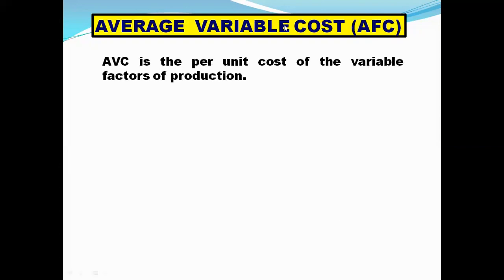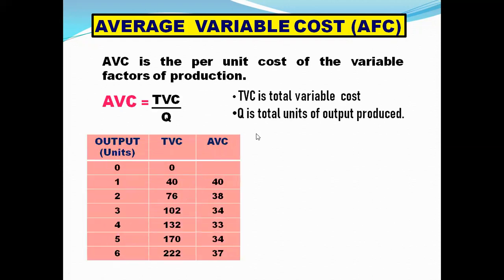Average variable cost is the per unit cost of the variable factors of production. AVC is given by TVC divided by Q, where TVC is total variable cost and Q is the total units of output produced. We find AVC by the same method — TVC by Q: 40/1 = 40, 76/2 = 38, 102/3 = 34. This is how we find AVC.